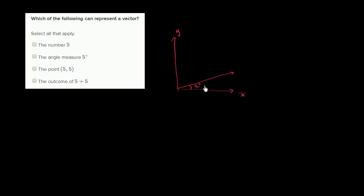But it's not giving us a magnitude. It's not saying how far in that direction, or how large in that direction. So an angle measure of 5 degrees, you're giving us a direction, but no magnitude. So let's just cross these out.